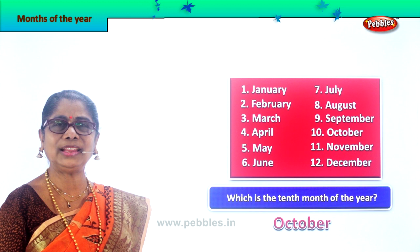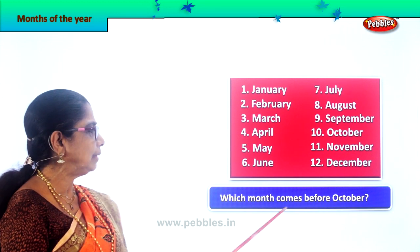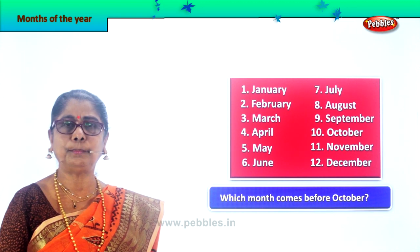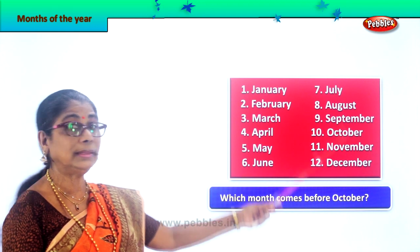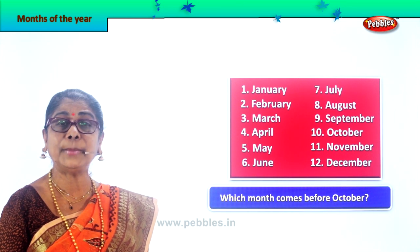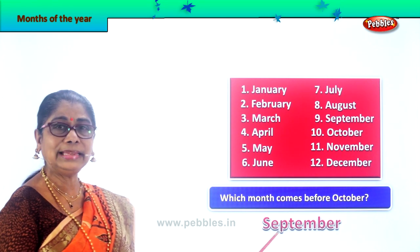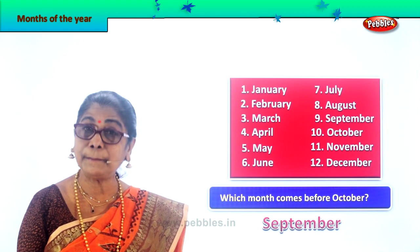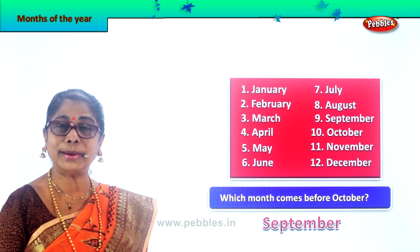Let's take another question. Which month comes before October? October is the tenth month. The month that is before October is September. How do you spell September? S-E-P-T-E-M-B-E-R, September. September comes before October.